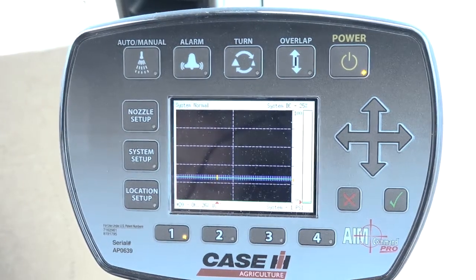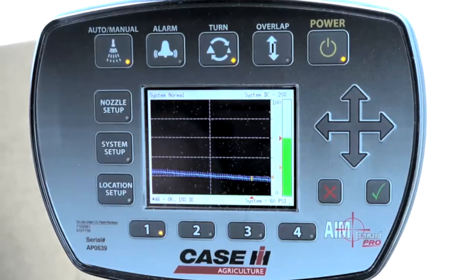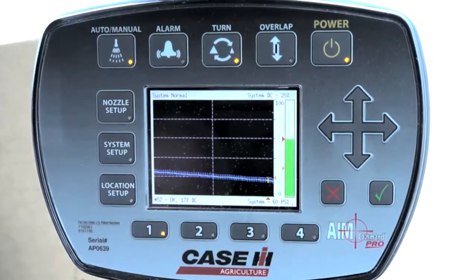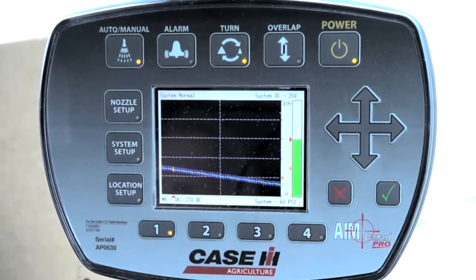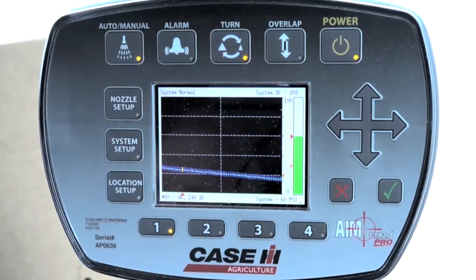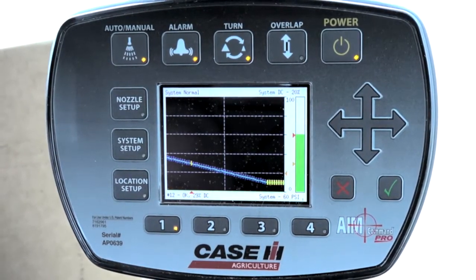To enable turn compensation, the operator simply needs to hold down the button. The operator will see the LED on the button illuminate notifying them that turn compensation feature has been enabled. If any issues are present that will cause turn compensation to not function correctly, a series of visual and audible alarms will alert the operator.